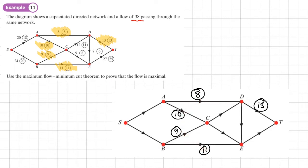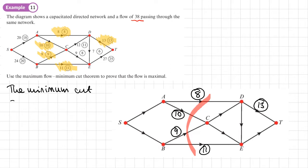A cut can be drawn through these saturated arcs — it doesn't need to include all of them, but can only pass through saturated arcs. The minimum cut is equal to 8 + 10 + 9 + 11, which gives a value of 38. This means the maximum flow equals 38.